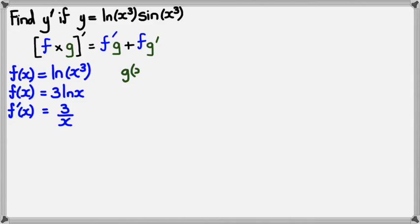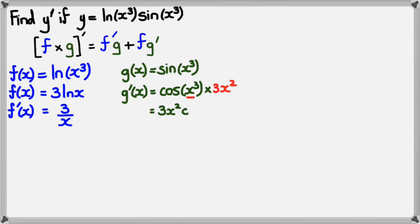And of course, we've got g(x), which is sin(x³). And this is where we have to use the chain rule. So g'(x) would be cos(x³) multiplied by the differentiation of whatever is inside the bracket. Now, x³ differentiates to 3x². So there we have it. g'(x) is equal to 3x² multiplied by cos(x³).